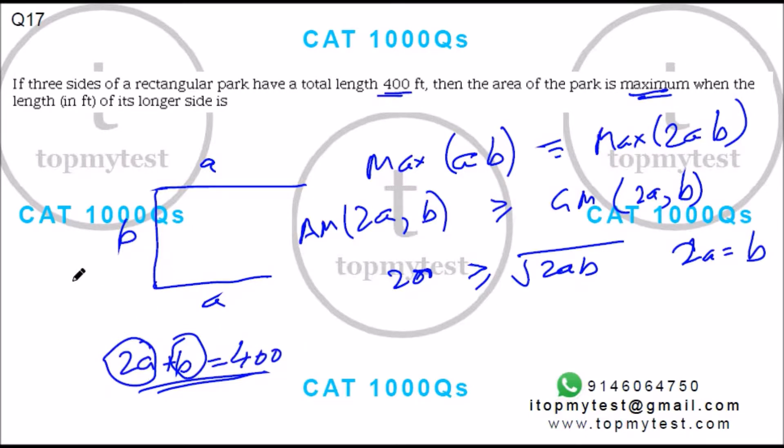This B is equal to 200, this value is 100, this value is 100. If you plug in this value here, 2a is equal to B, so this will be 2b will be 400, B will be 200, this will be 100 and 100.